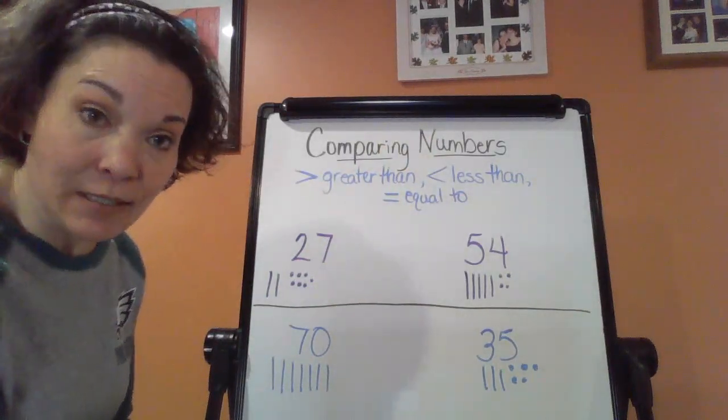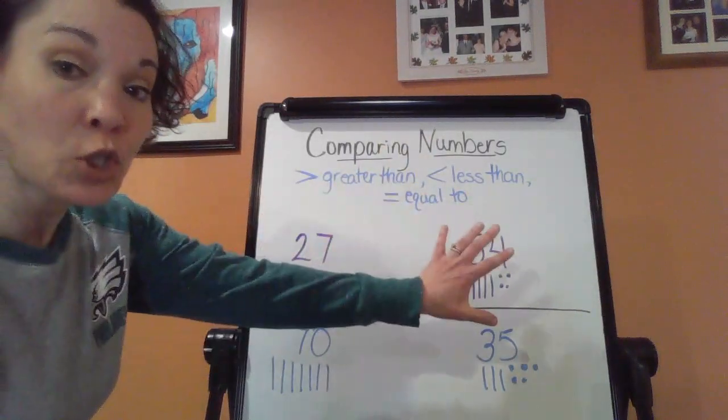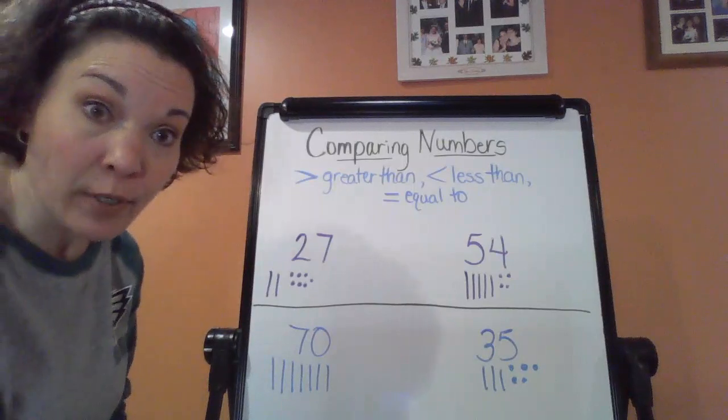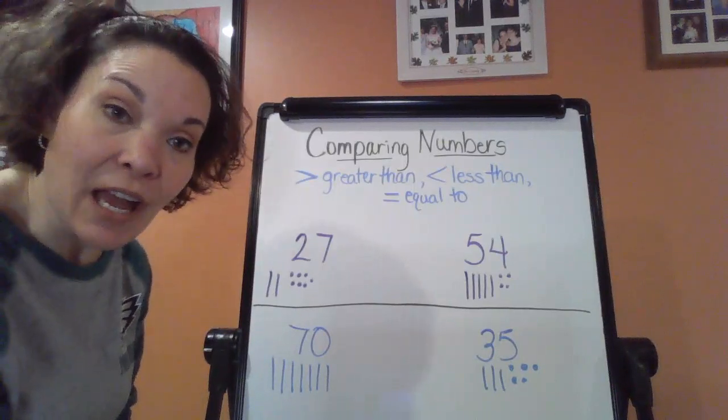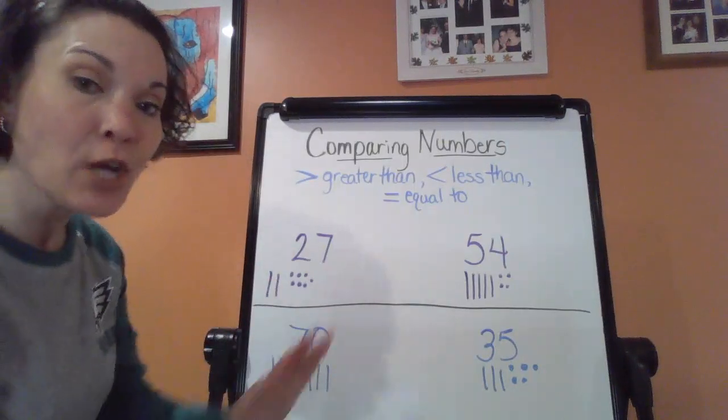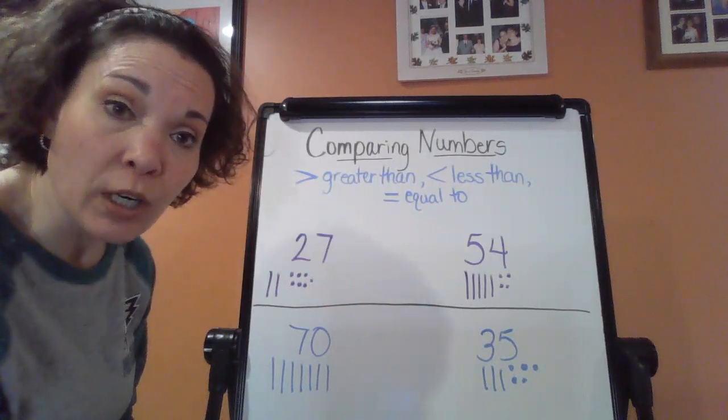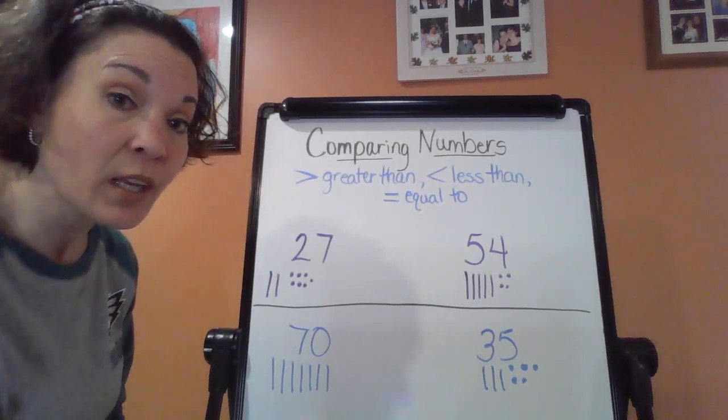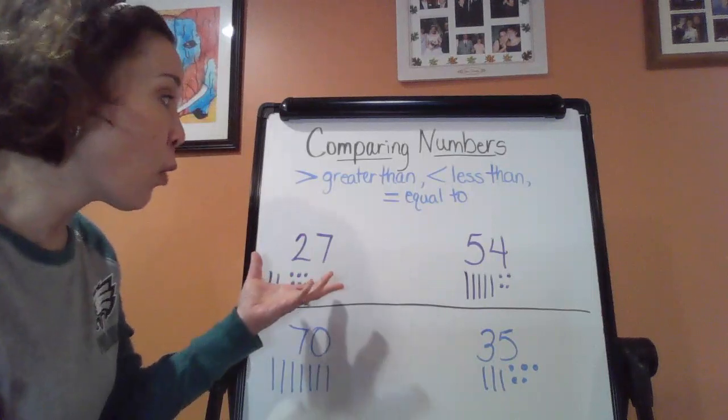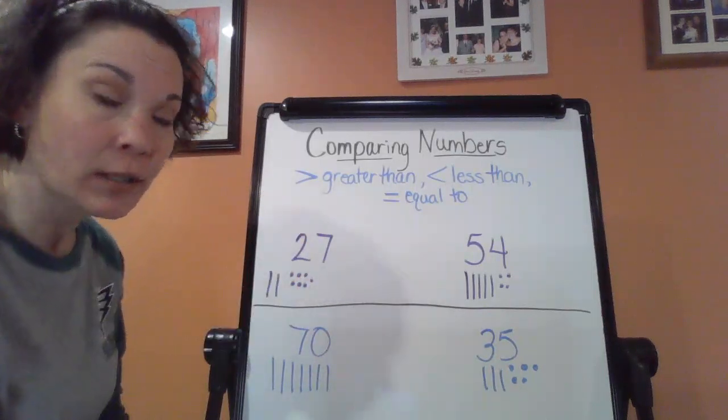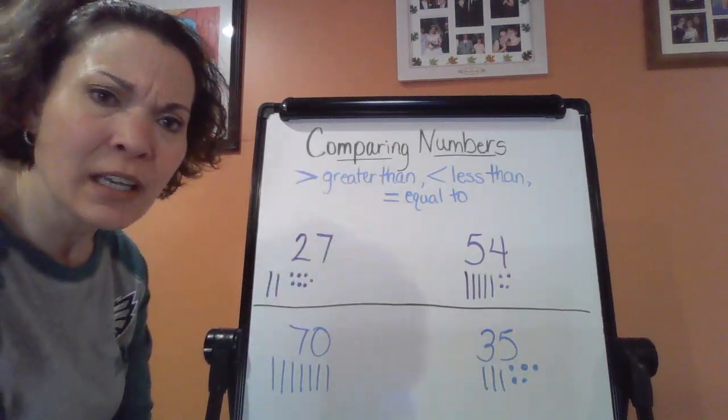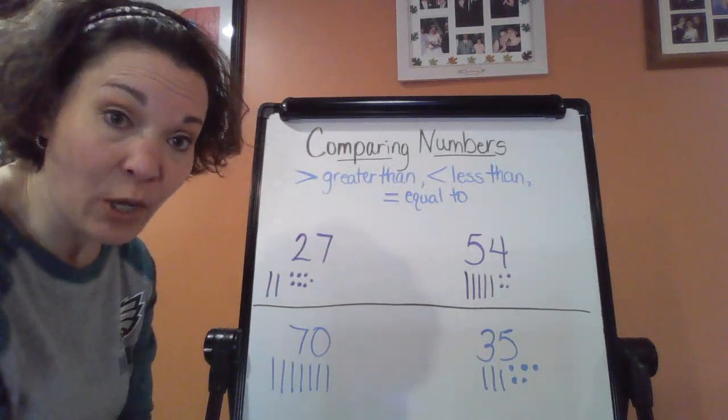So what that means is, I'm going to be looking at two two-digit numbers, and I have to decide by looking at each number who is worth more versus who is worth less. More, as in greater. Less, which means it's smaller in value.